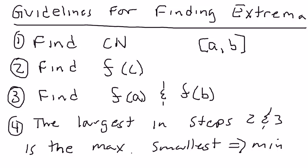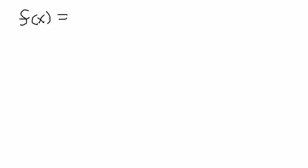A lot of times you'll see questions like this on the AP exam — they'll give you a function, they'll give you an interval, and they'll ask you for the extrema of the function on that particular interval. That's when you have to find the absolute maximum on the interval given to you. Let's take a quick example: an easy polynomial function. Let's say f(x) equals 6x squared minus x cubed, defined on the interval from negative one to five.